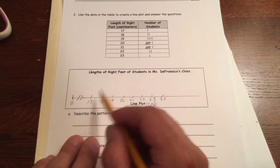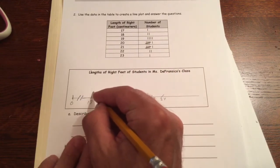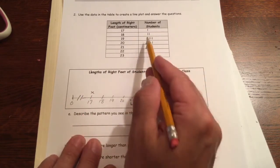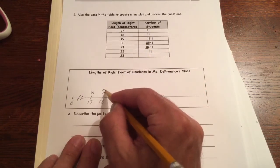So let's see 17, one student with 17. One student, one X. 18 is two, so that's two X's. One, two.